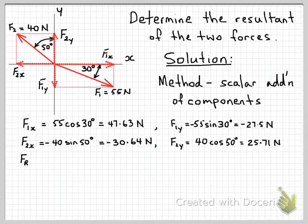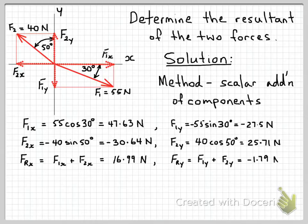So now to find the resultant in the x direction, we simply add up the scalar components in the x direction. So F1x plus F2x equals 16.99, so 47.63 minus 30.64. And in the y direction we'll have the resultant component in the y direction, FRy equals F1y plus F2y, which is the sum of the two components in the y direction. So here we have minus 27.5 plus 25.71 gives us minus 1.79 Newtons in the y direction.